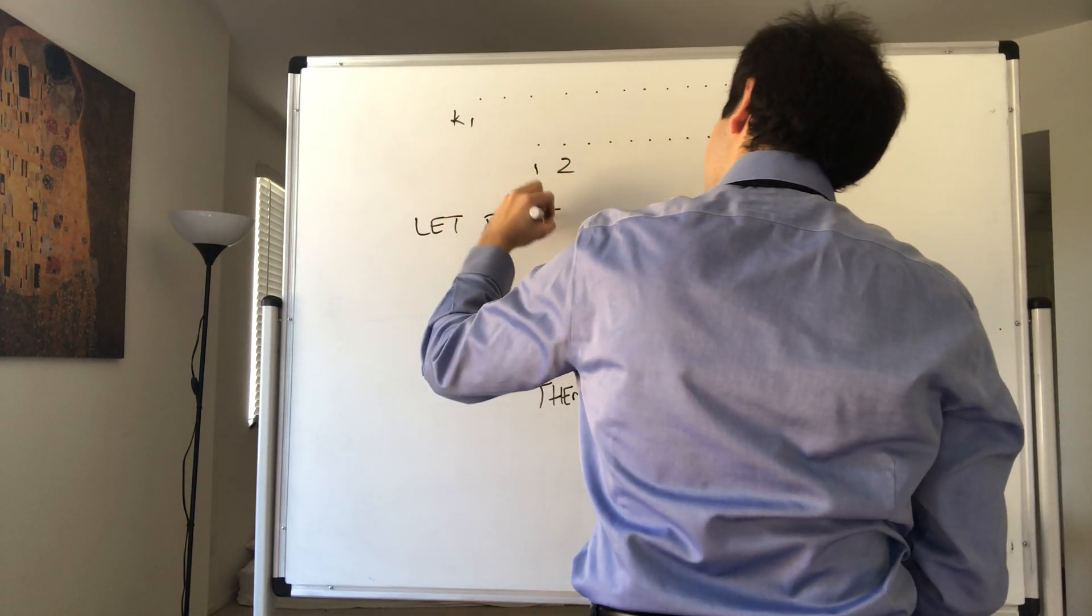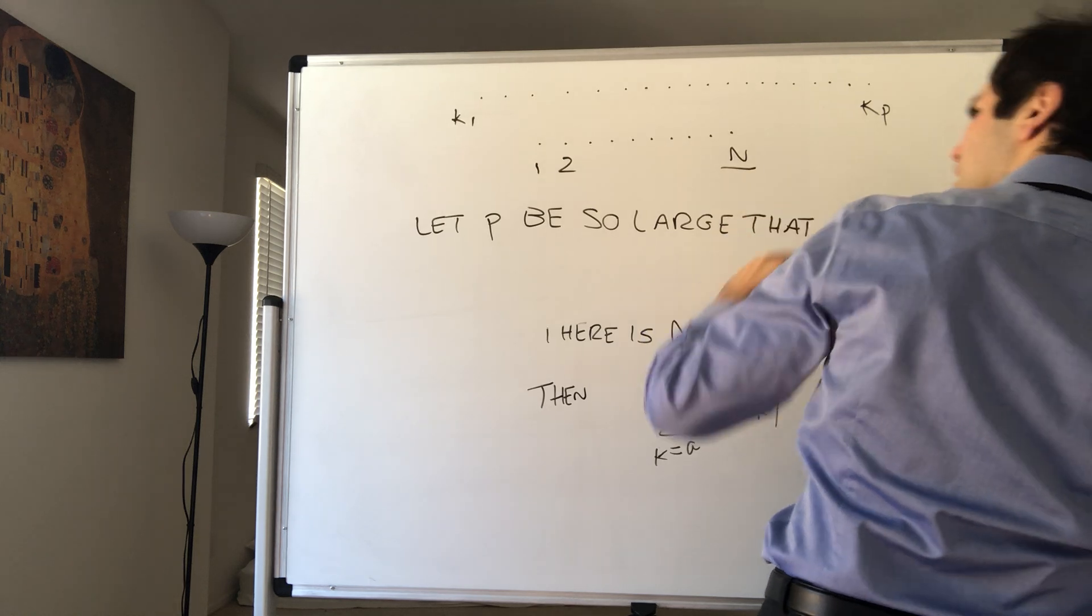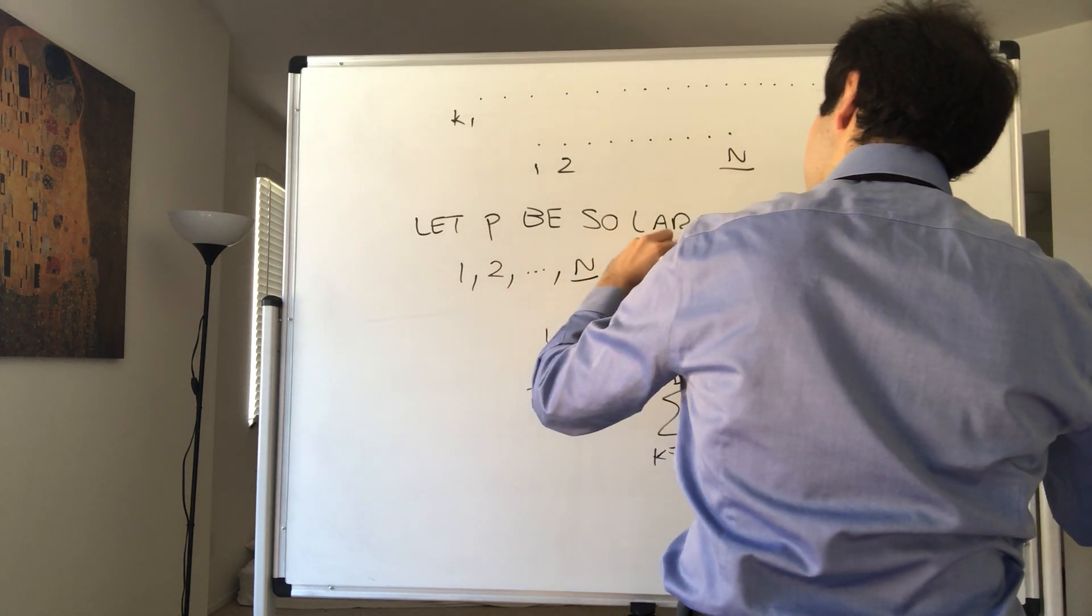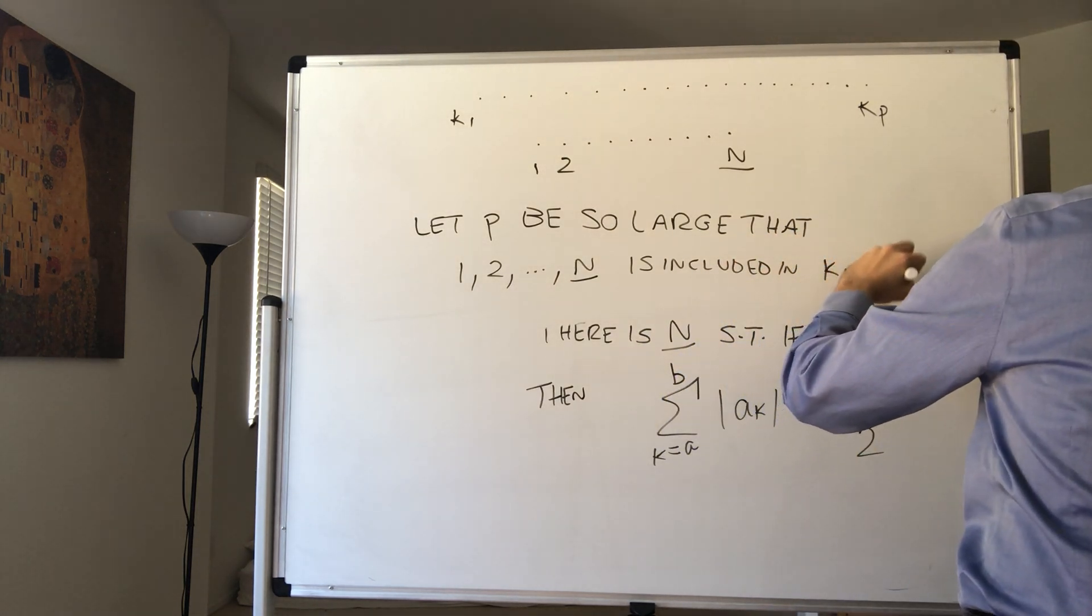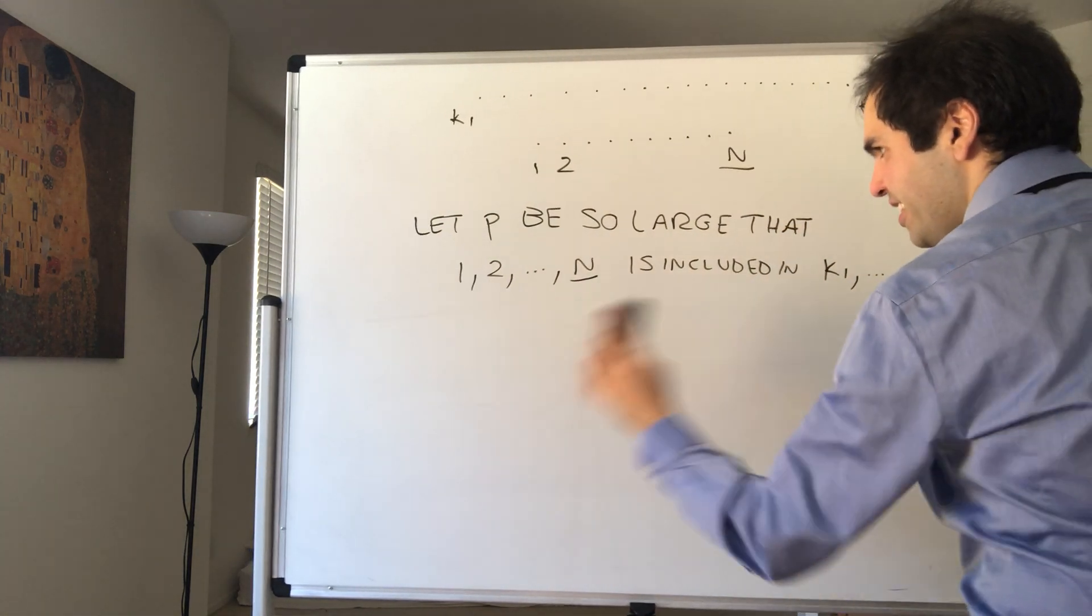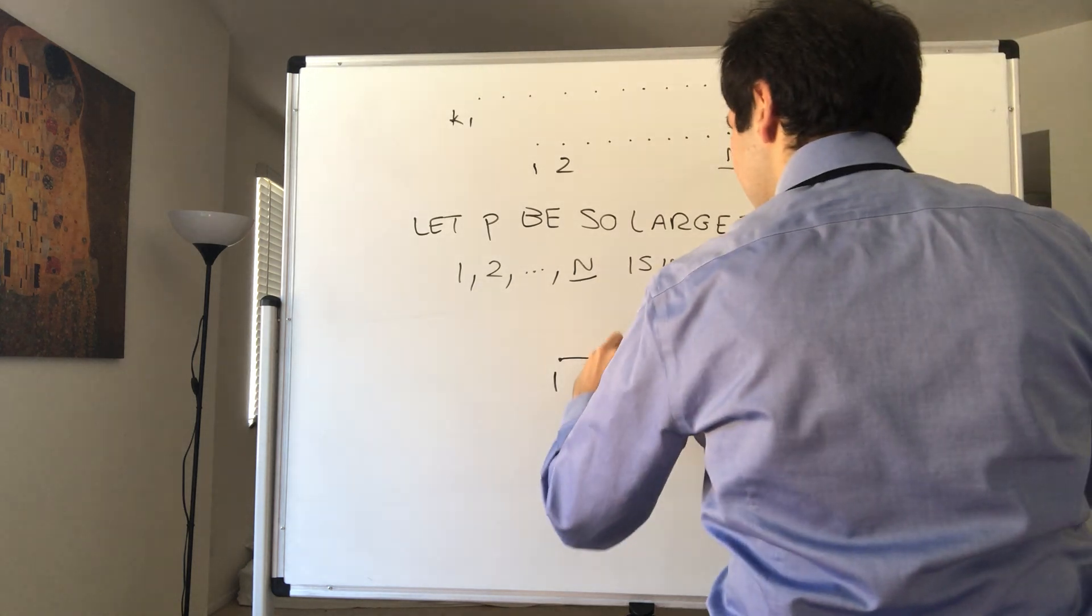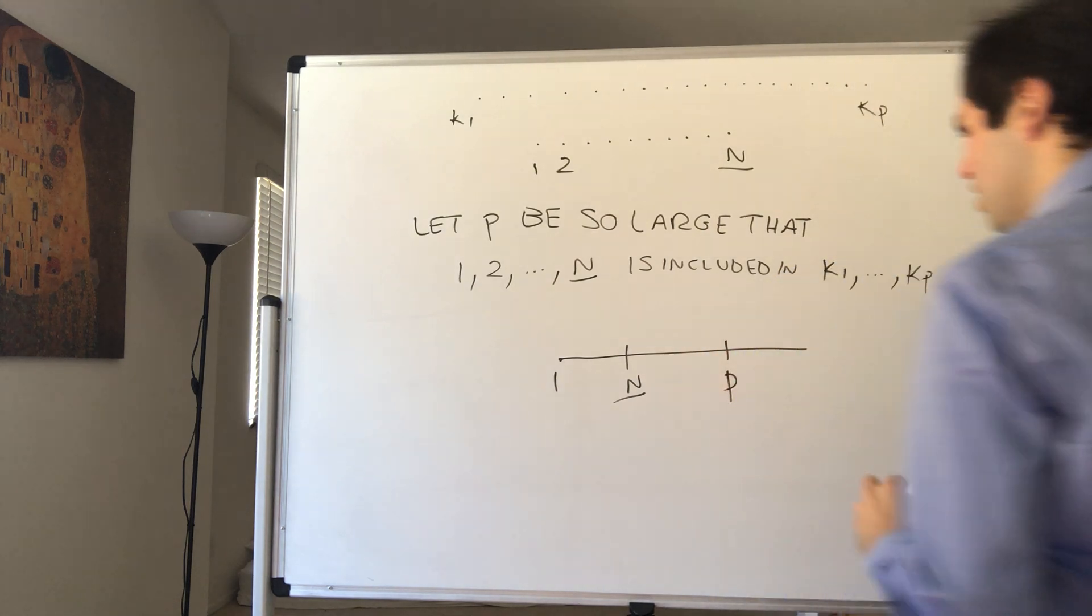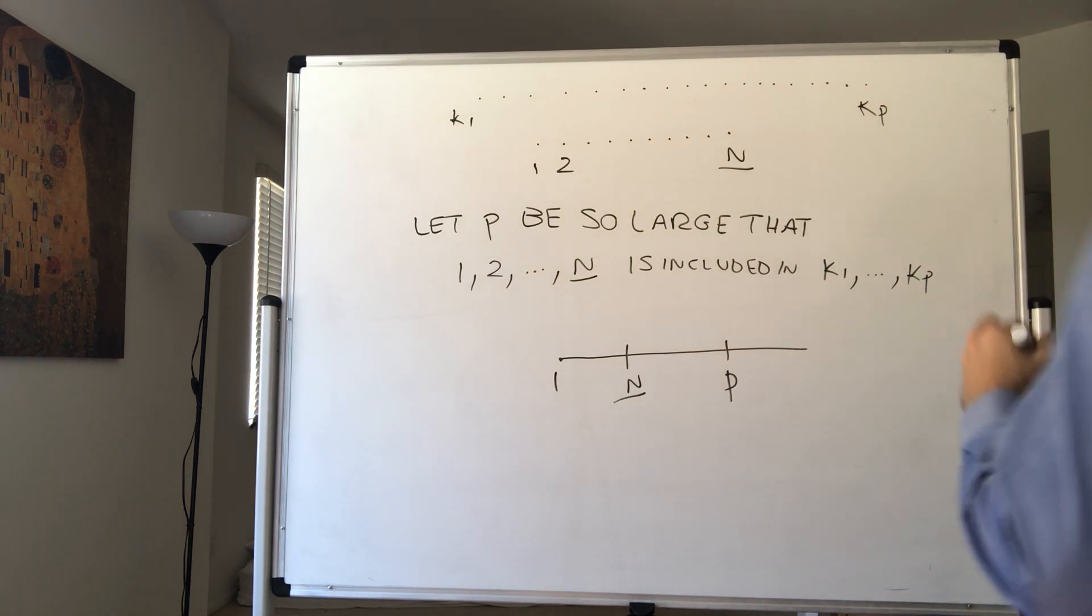Let P be so large that 1, 2 up to capital N is included in K1 up to K_P. Just to remind you the hierarchy: that was 1, and then that is capital N. And of course, we'll choose P even larger because those are N terms. We'll need at least N terms here, and then we'll let N be even bigger.